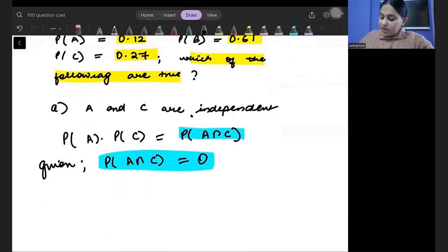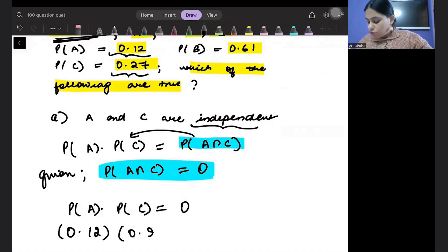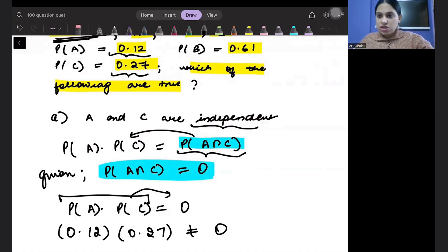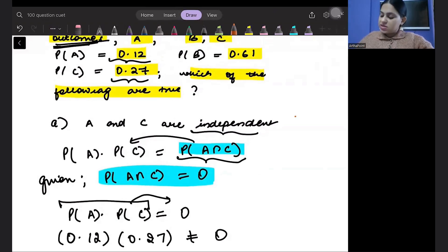But if they are independent, A intersection C should equal A into C. So probability of A into probability of C should be zero. But is that the case? No, probability of A into probability of C is 0.12 into 0.27, this is not equal to zero. So we can say that they are not independent.